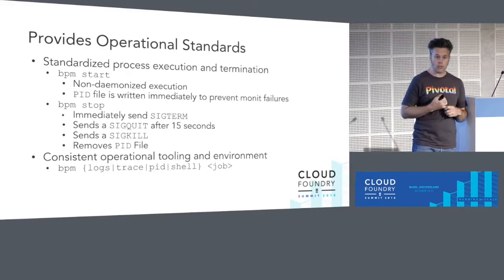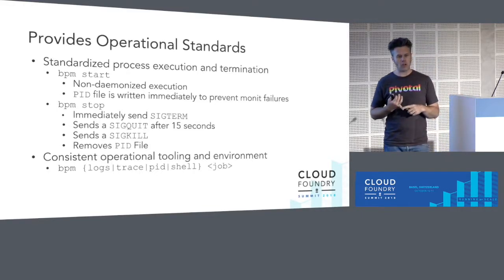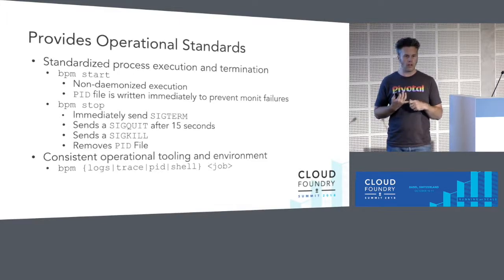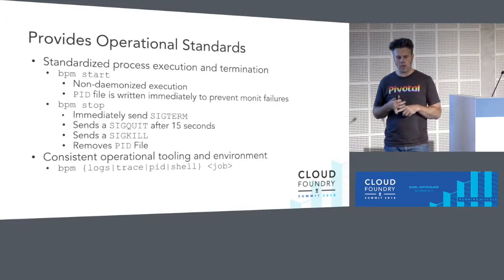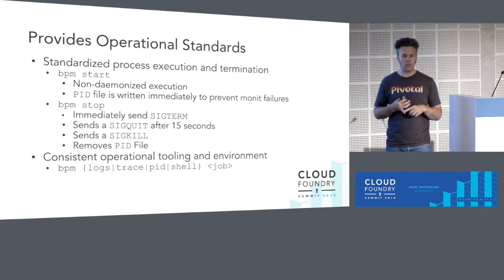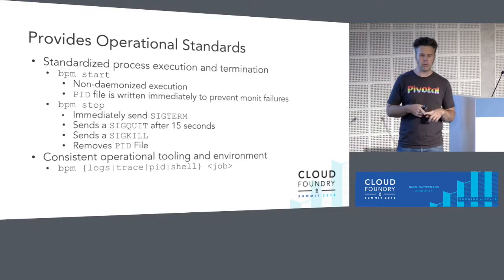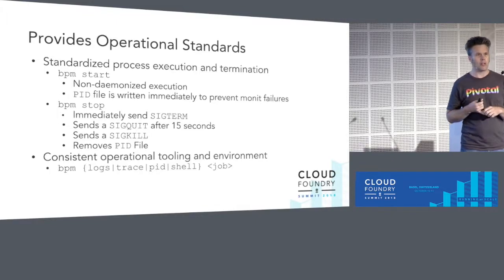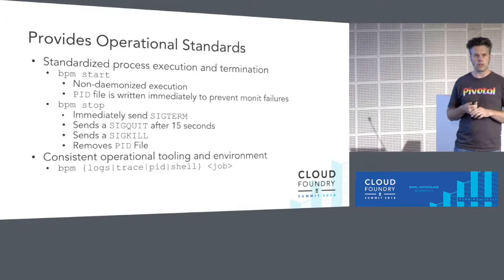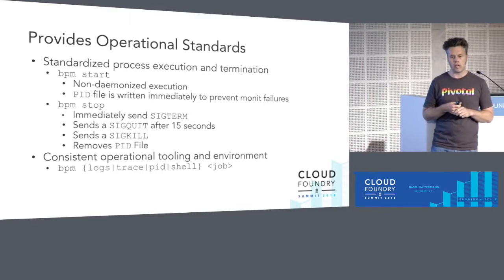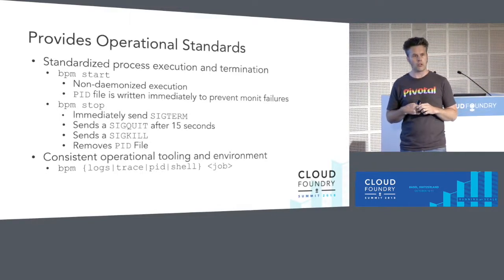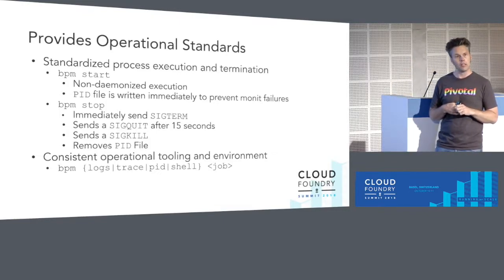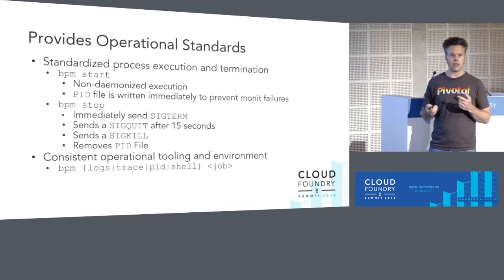BPM also provides some operational standards. BPM start expects processes to start non-daemonized and writes the PID file directly to allow Monit to know that the process is up. BPM stop has a conventional shutdown sequence — sends SIGTERM, SIGQUIT, SIGKILL, and then removes the PID file. For operators, we have tools like BPM logs, which shows standard out and standard error; trace, which provides an opinionated strace of a running process; PID to get the PID file; and shell, which lets you execute bash inside the job's container for debugging.